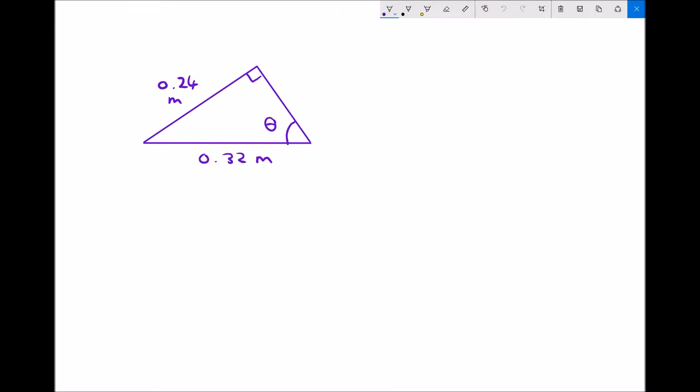We're going to look at one final example of how trigonometry can be used, and this time we're going to use trigonometry to find an unknown angle. In this case, the angle we're trying to find is the angle theta.